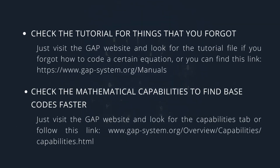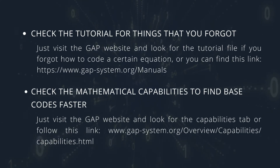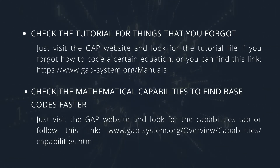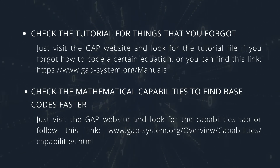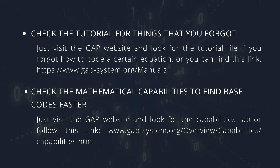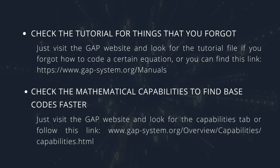Third, check the tutorial for the things that you forgot. Just visit the GAP website and look for the tutorial file if you forgot how to code a certain equation. Lastly, check the mathematical capabilities to find base codes faster — just visit the GAP website and look for the capabilities tab.